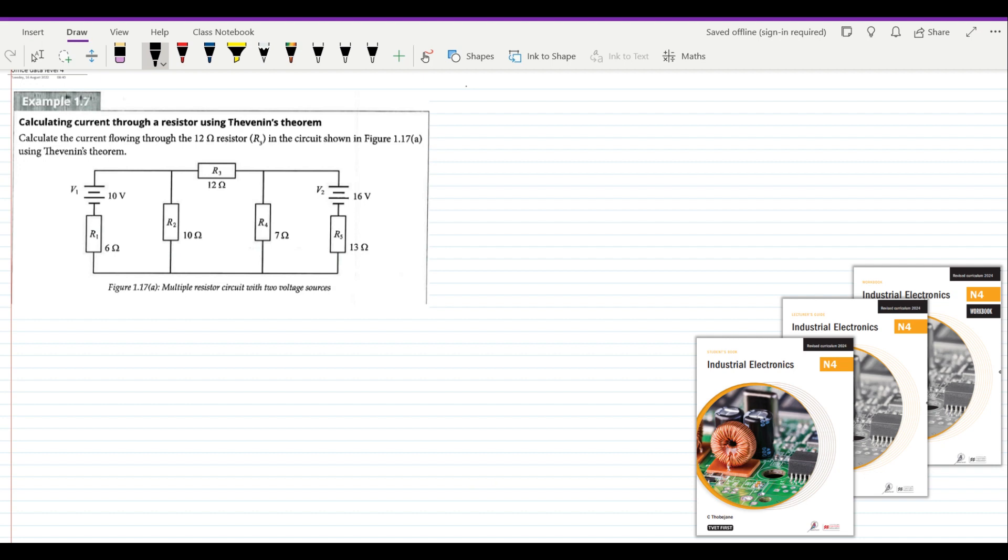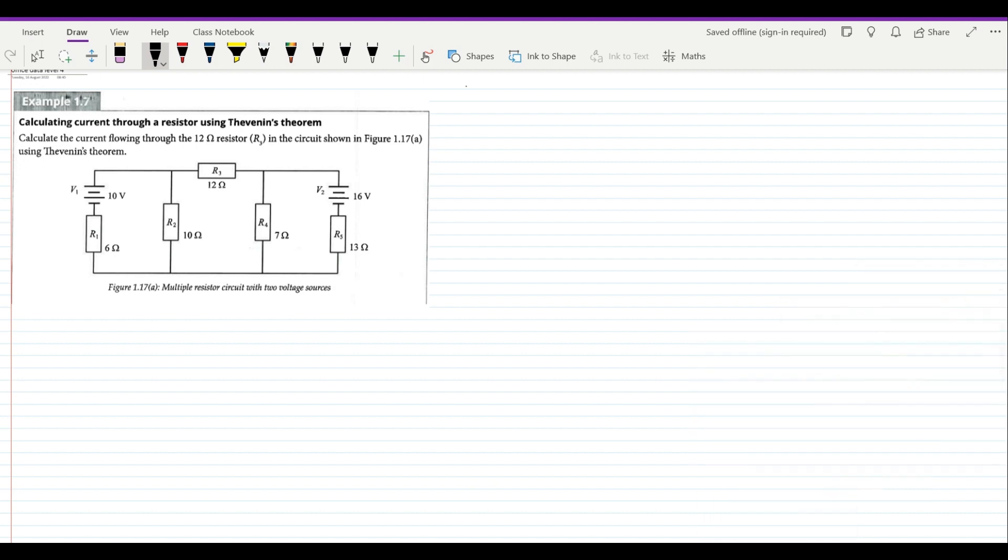We will attempt to find the current in the directed load resistor in the circuit by making use of Thevenin's theorem. If you recall in our previous session we used the very same theorem but on a simpler circuit. The question reads: calculate the current flowing through the 12 ohm resistor, which is R3 in the circuit shown in figure 1.17a by making use of Thevenin's theorem. The first thing you do when you encounter a question like this is to omit that particular load resistor and after omitting that load resistor you must mark your points A and B.